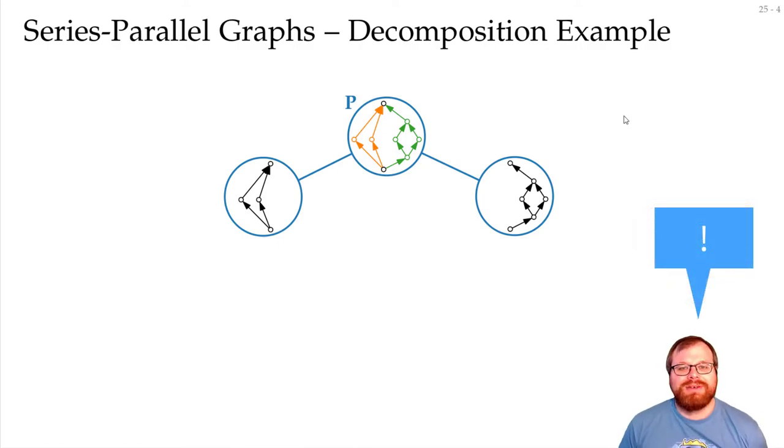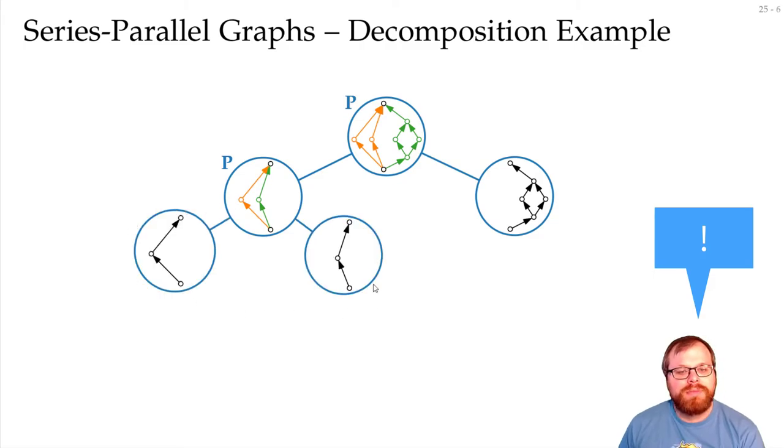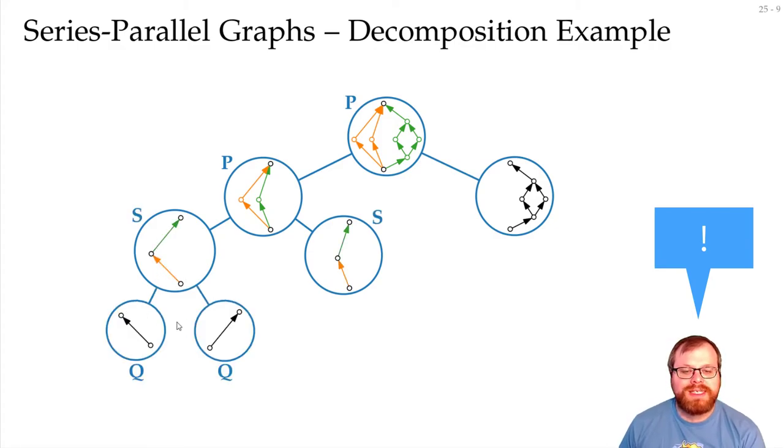Okay, I'm sure you made it, but for sake of completeness, let's do it together again. Here on the left, we can do a parallel composition into the left and the right subtree. Both subtrees we get are just paths of length 2, which we get with a series composition of single edges. So we're done with the left subtree here.